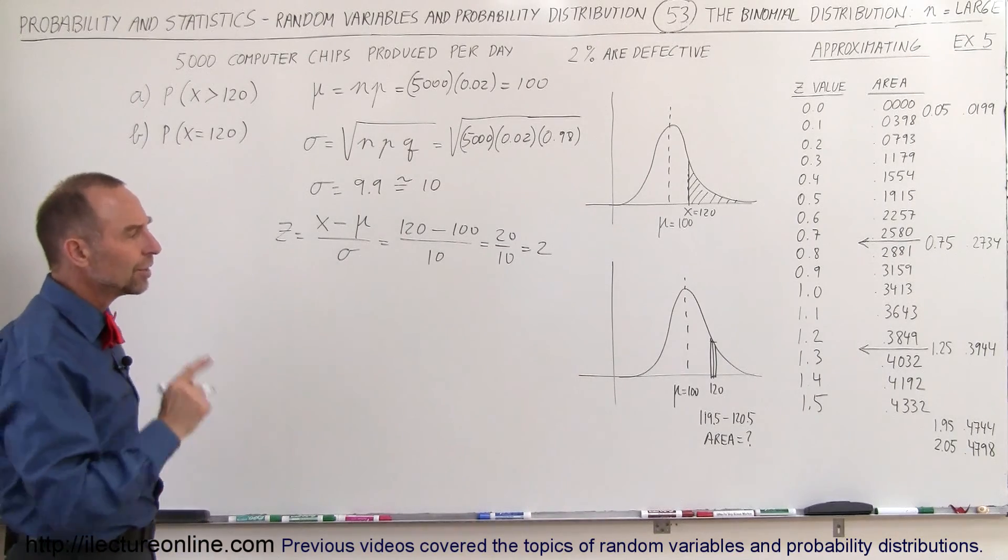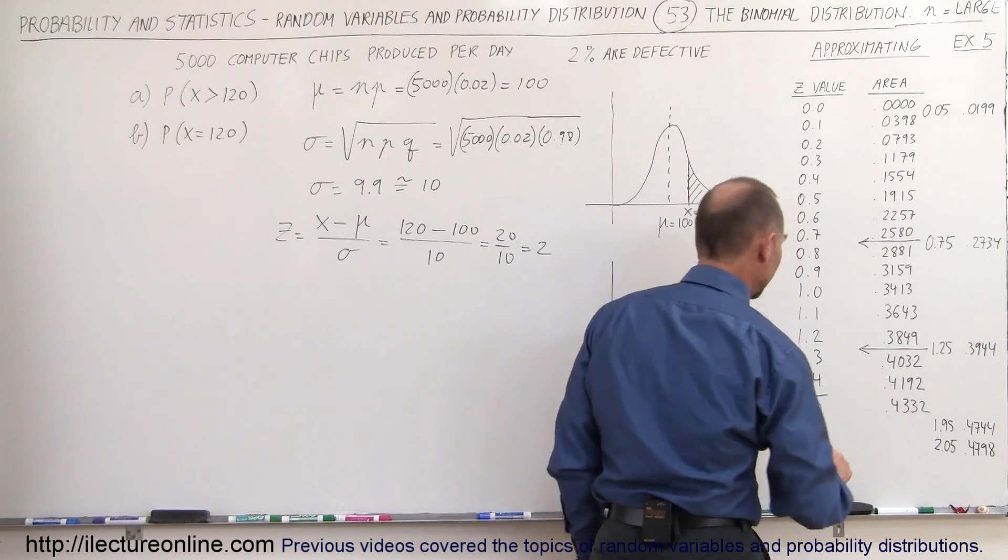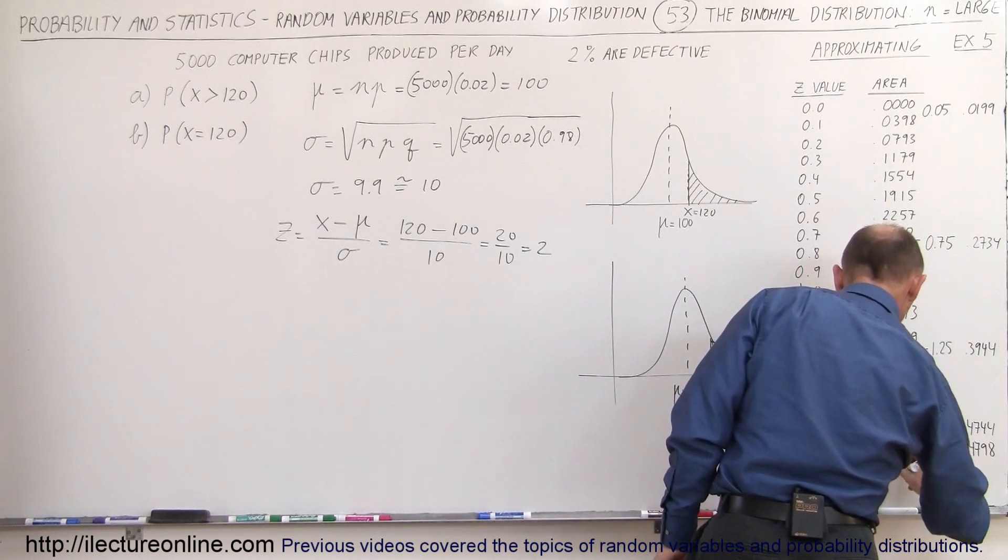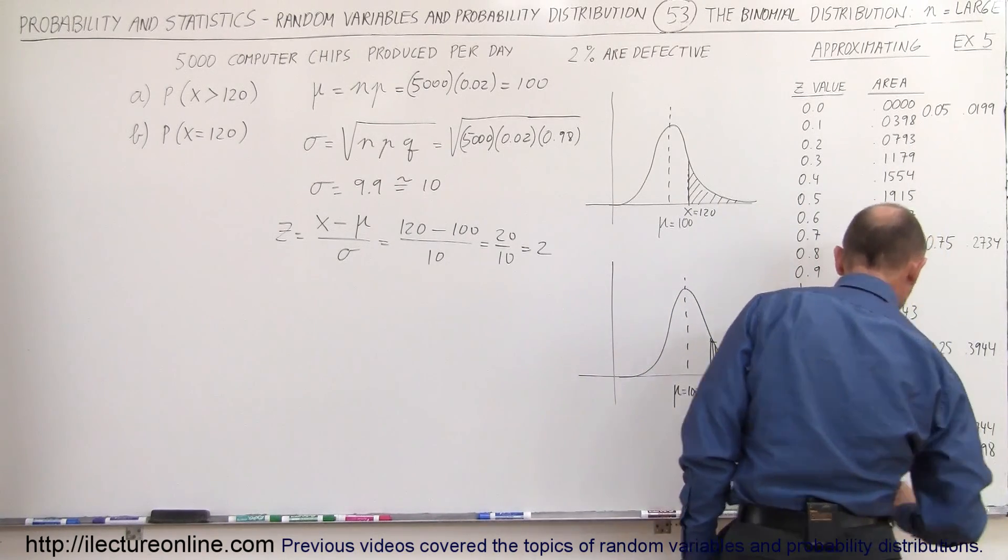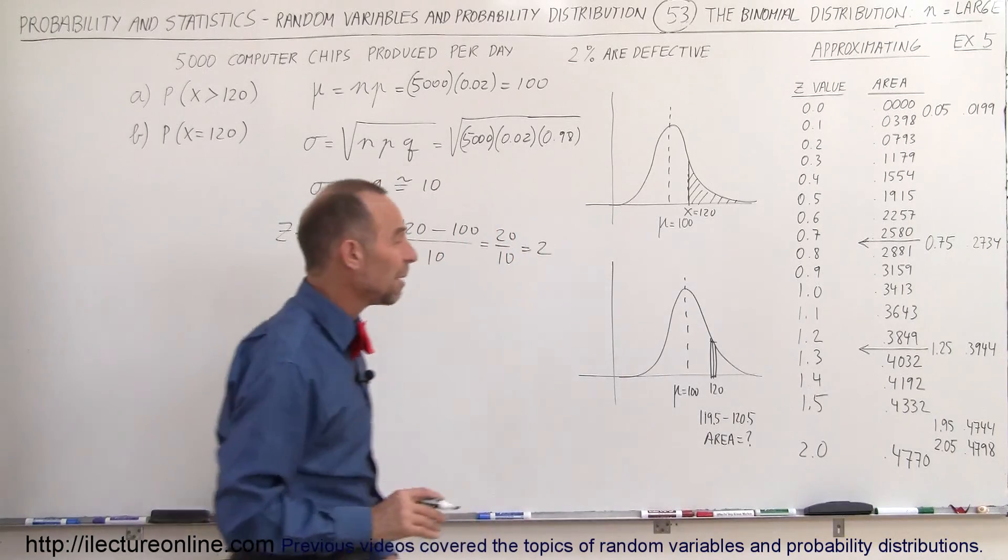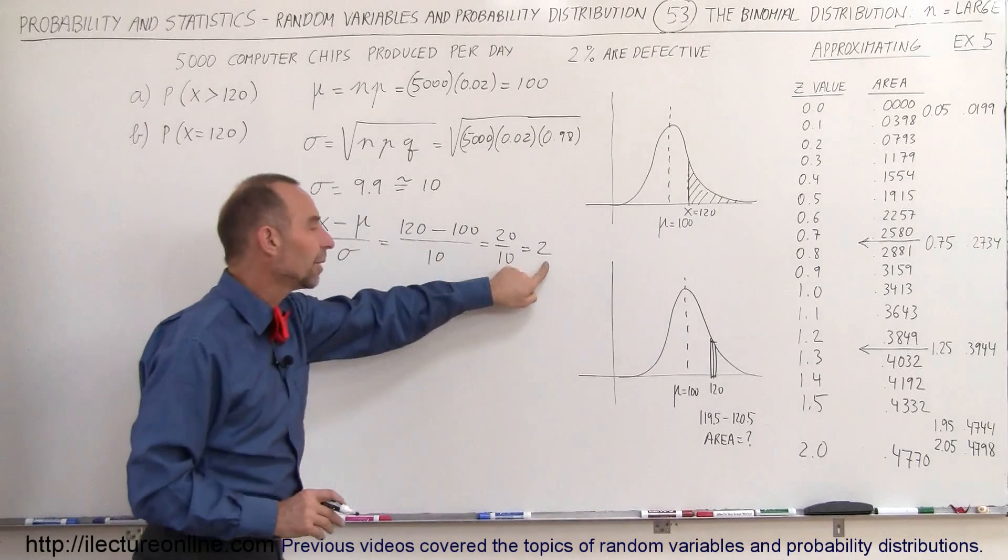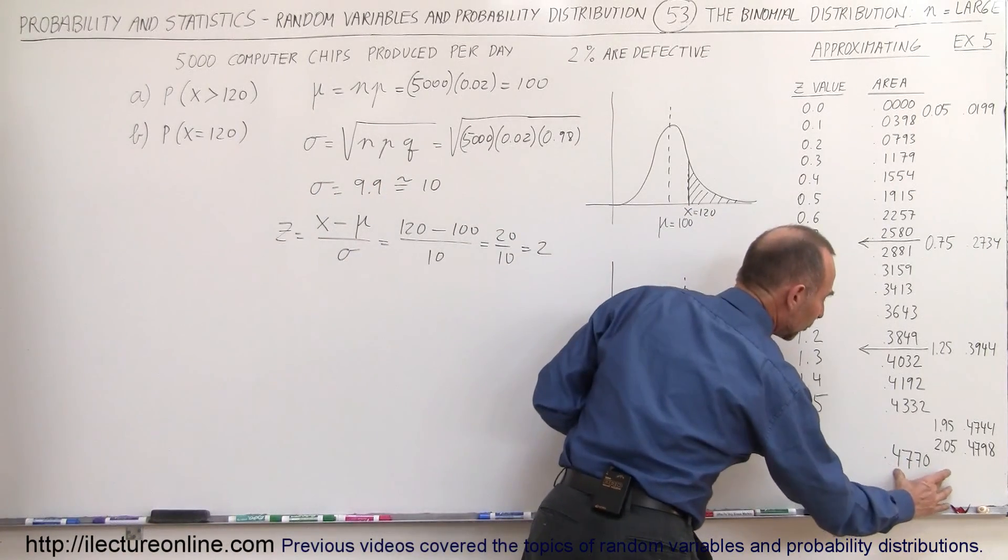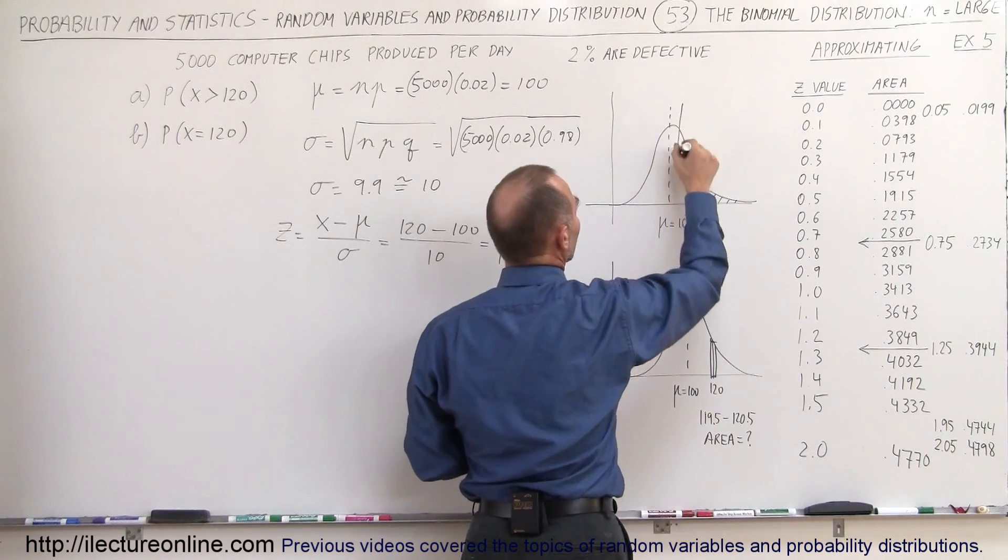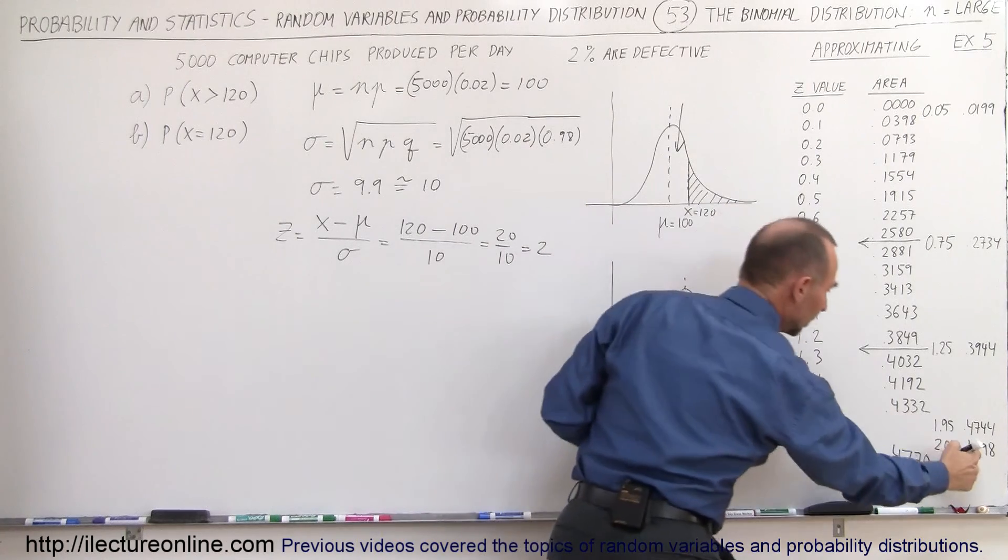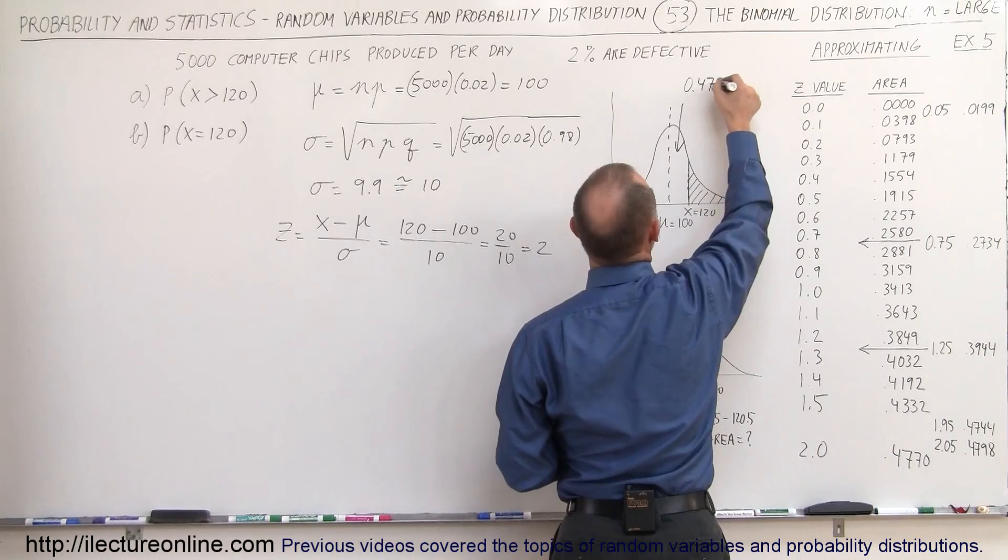It looks like I'm going to need another value on my table. I need the value 2.0 and if I'm not mistaken that's equal to about 0.4770. So if Z is equal to 2 sigma, then the area underneath the curve is 0.4770.